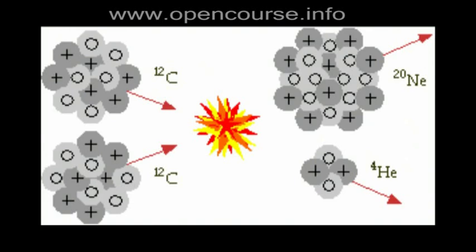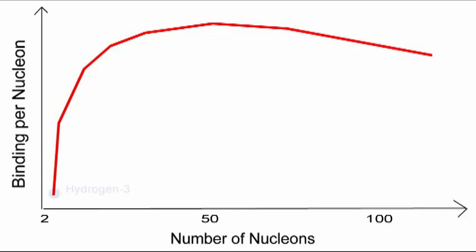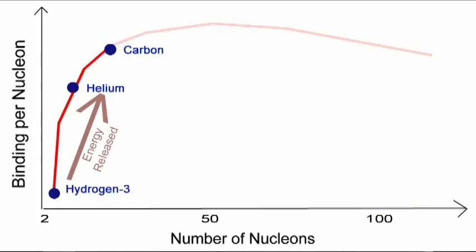However, when you fuse carbon into bigger nuclei, the change in binding of each nucleon in the nucleus will be much less, and as a result, the energy per nucleon we can gain from fusing nuclei together decreases as we get to bigger and bigger nuclei.